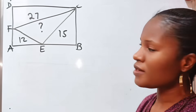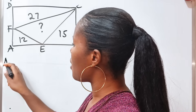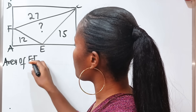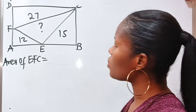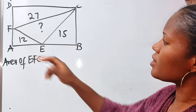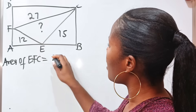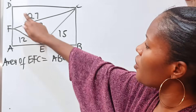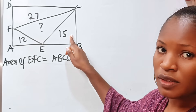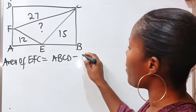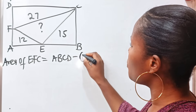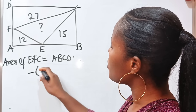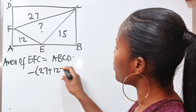The area of triangle EFC is going to be equal to the area of the rectangle ABCD minus the sum of the areas of these three triangles given. So it should be minus 27 plus 12 plus 15.